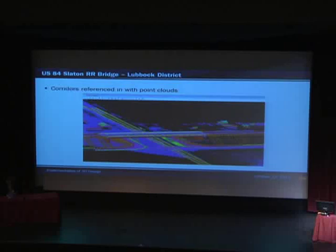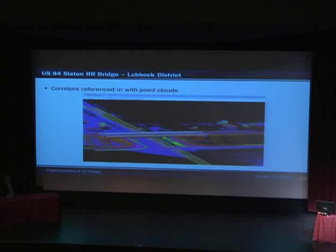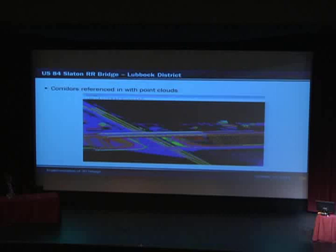In this image what you're seeing is the raw design corridor overlaid over the point cloud. There are different spectrums for elevation — the darker colors are the lower elevations and the lighter colors, green, are some of the higher elevations. One of the issues that we're able to solve with this program is identifying utility conflicts. You can kind of make out a line that represents the power line that was going to be in conflict with our bridge.